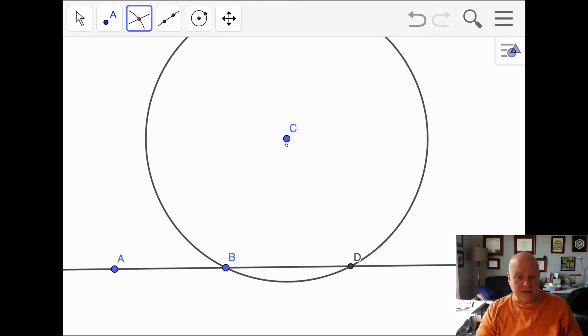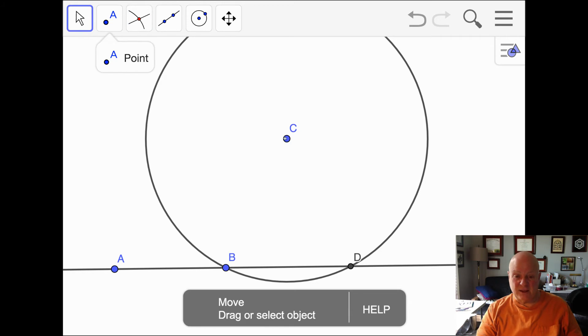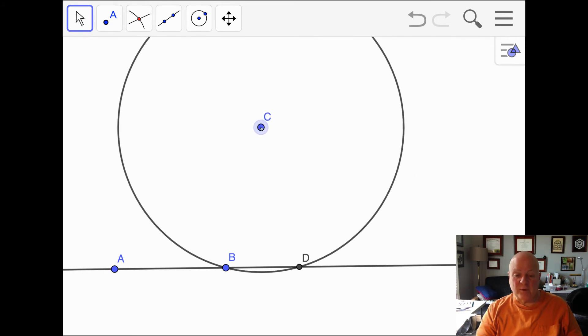You'll notice I have circle C. CB and CD are both radii of the same circle so they're the same distance. That means that C would be on the perpendicular bisector of BD, segment BD.